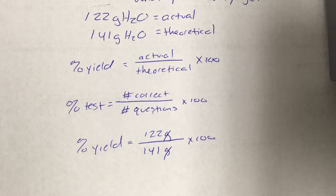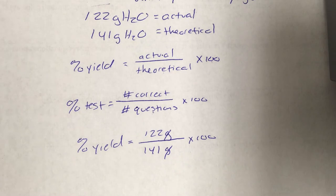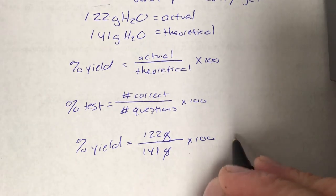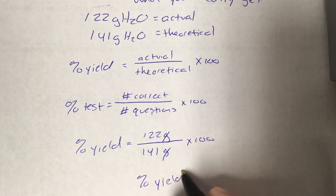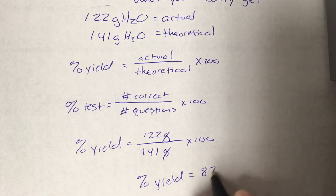122 divided by 141 is 0.8652482227 times 100 is 86.524. I'm just going to round that to a whole number because that's what I'd like to do. Our percent yield is 87 percent.